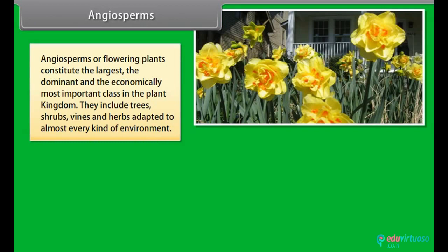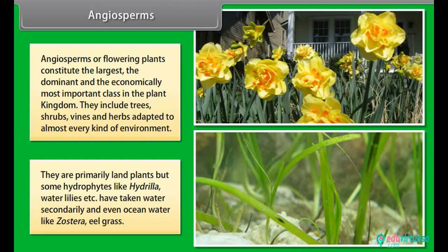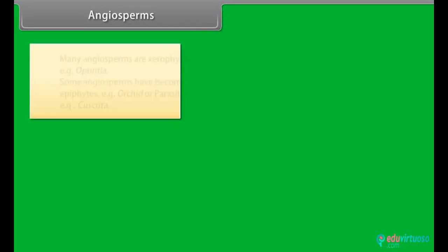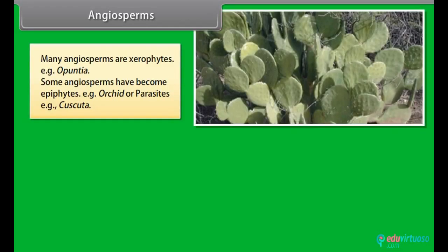Angiosperms or flowering plants constitute the largest, the dominant, and the economically most important class in the plant kingdom. They include trees, shrubs, vines, and herbs adapted to almost every kind of environment. They are primarily land plants, but some hydrophytes like hydrilla and water lilies have taken to water secondarily, and even ocean water, like zostera or eel grass. Many angiosperms are xerophytes, for example opuntia.